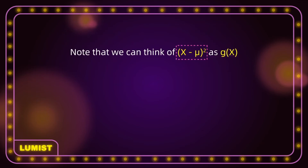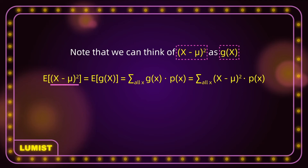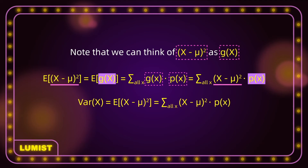Note that we can think of (x minus mu) squared as g(x) and use the previous formula. So the expectation of (x minus mu) squared is equal to the expectation of g(x), which equals the summation of (x minus mu) squared for all the possible x's in the distribution, multiplied by their corresponding probabilities. This gives us the proper formula for variance of x: Var(x) equals the sum of (x minus mu) squared times P(x) for all x. To calculate variance, find the difference between every possible x and the expectation, square that distance times the probability that x occurs, and sum over all x's.